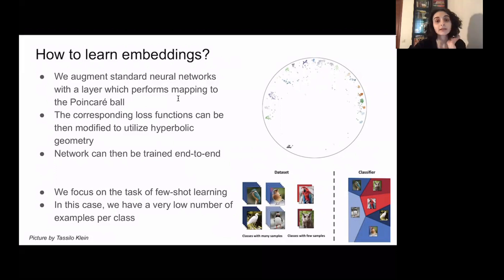In our experiments we consider the task of few-shot learning. In this setting we have a very low number of examples per class in the batch, so the quality of embedding is crucial here. On the top picture on the right you can see the visualization of learned embedding for Poincaré Ball model for datasets consisting of images of birds. We can see that this embedding looks very distinctive.